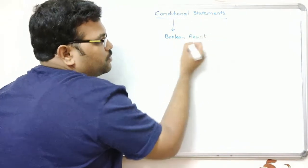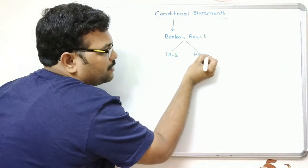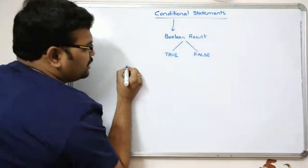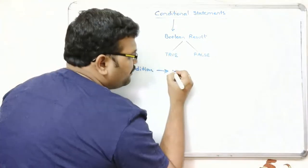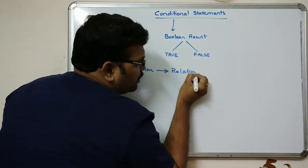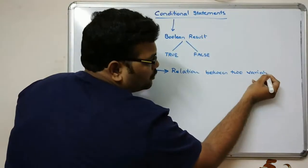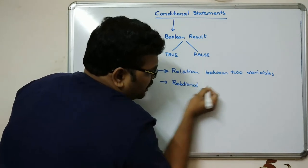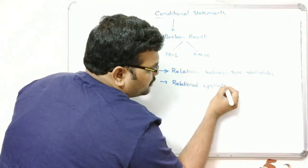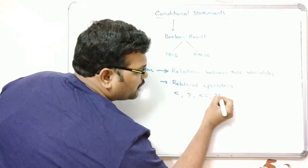The boolean result may be either true or false. A condition is the relation between two variables, and here we use relational operators — less than, greater than, less than or equal to, greater than or equal to.